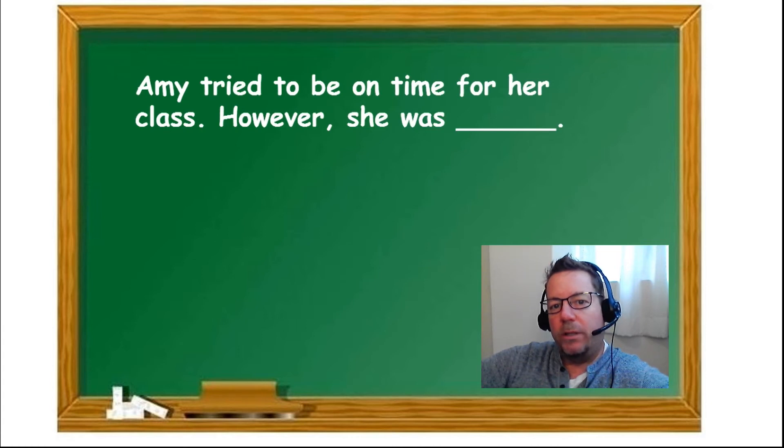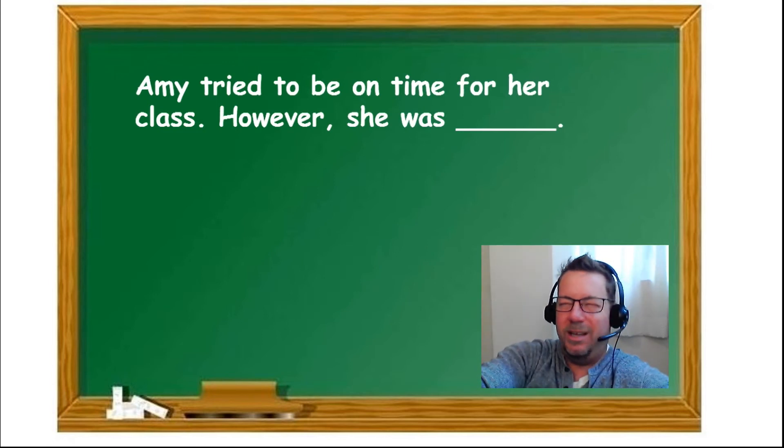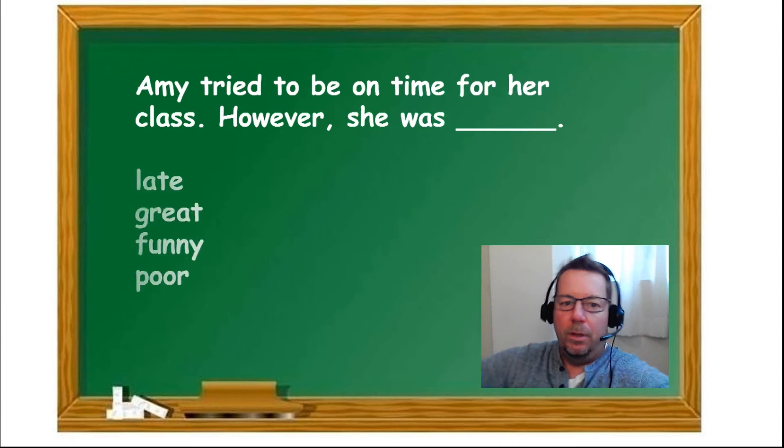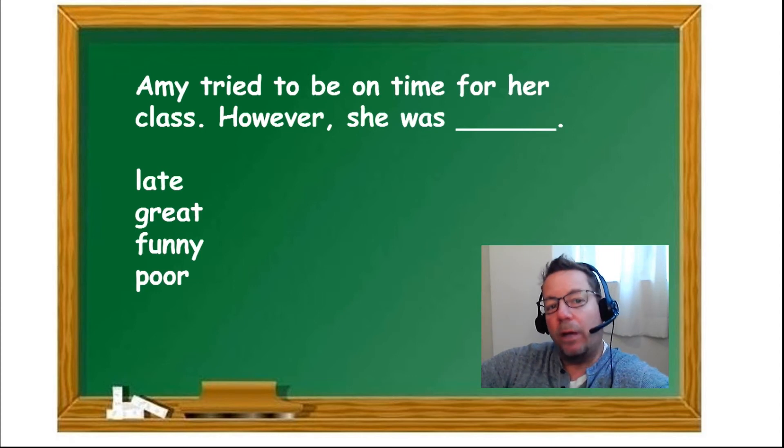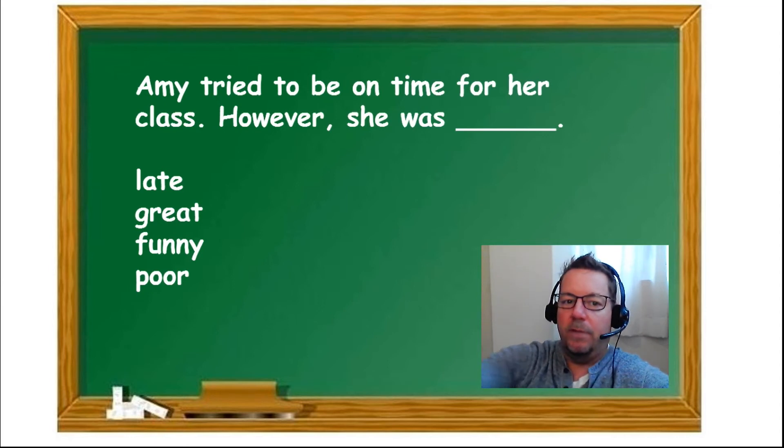Amy tried to be on time for her class. However... So what's the opposite of on time? Because she said however. However means it's not going to be the same. However she was late, great, funny, or poor? Amy tried to be on time for class. However, so we're looking for the opposite of on time. The opposite of on time is late. However she was late.